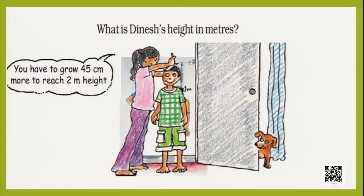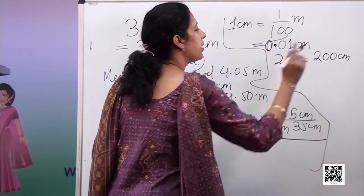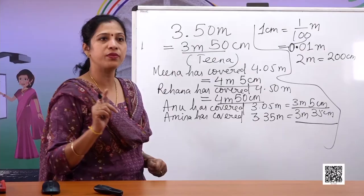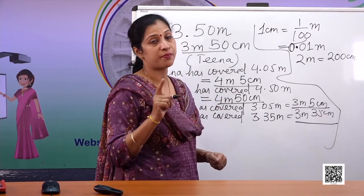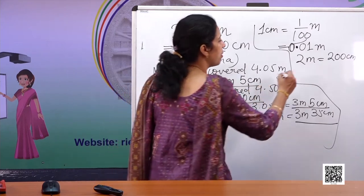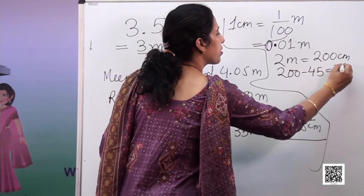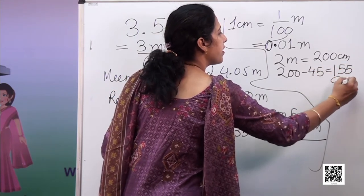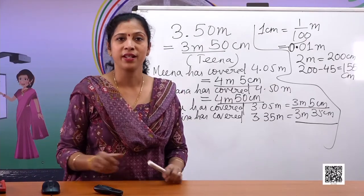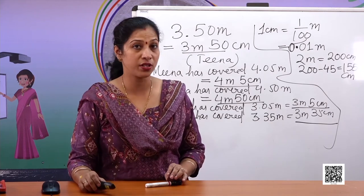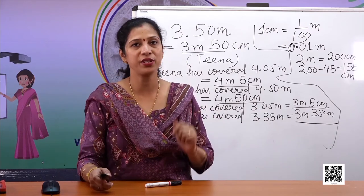2 meters equals 200 centimeters because 1 meter equals 100 centimeters. Dinesh's height is 45 centimeters less than 200 centimeters, so his height is 200 minus 45, which equals 155 centimeters. You can also measure your own height by standing near a wall and using a measuring tape.